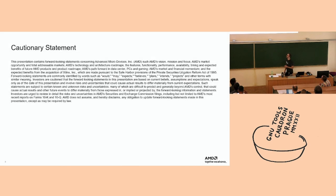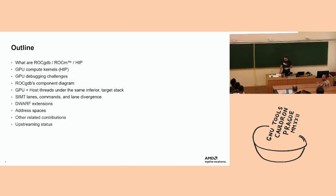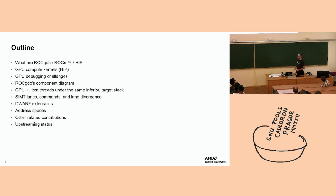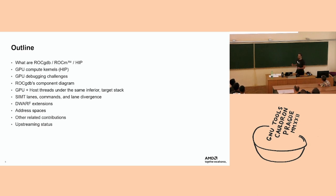First I'm going to give a quick explanation of what ROC GDB is if it's not obvious. Then I'm going to explain a few problems about GPU debugging, the challenges we faced, and what makes this a different port than most CPU ports in GDB. Then we'll go over all these challenges and explain how we tackle them in ROC GDB. And if there's time, a bit about other tangentially related contributions and upstreaming status.